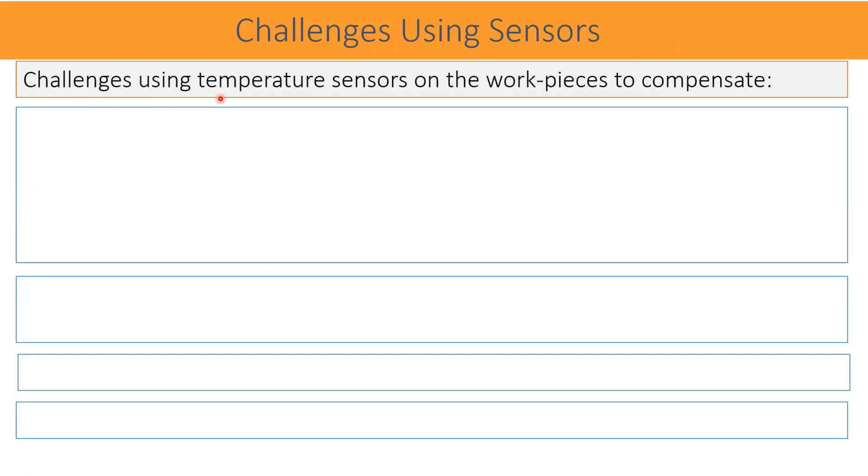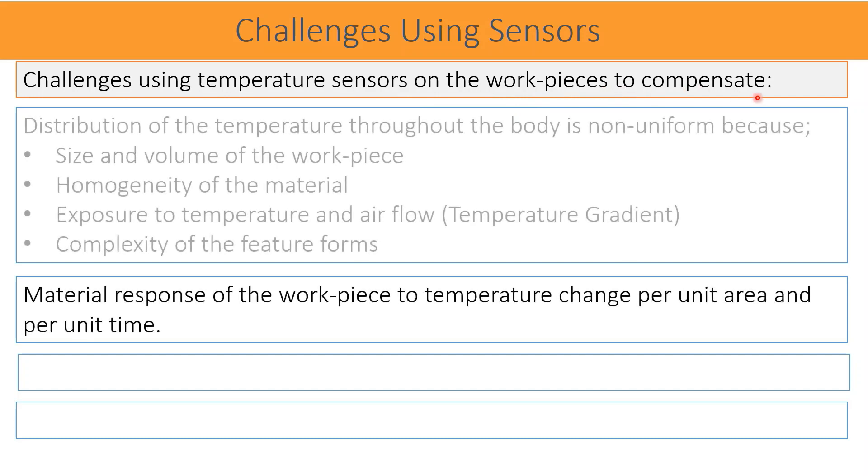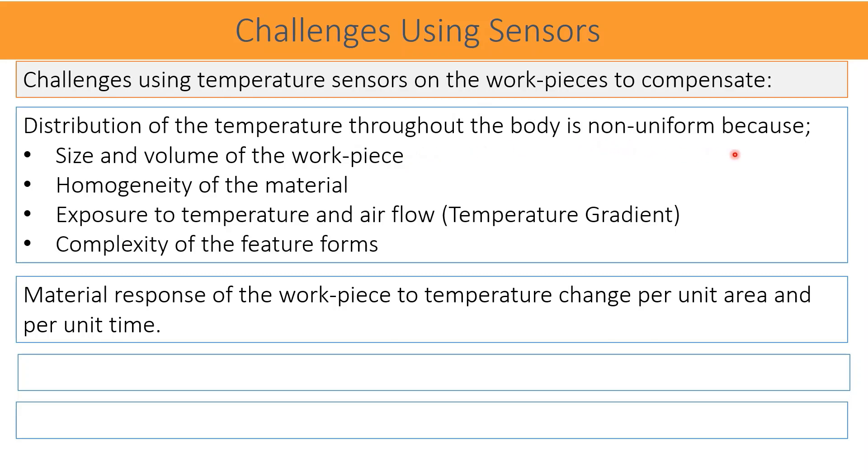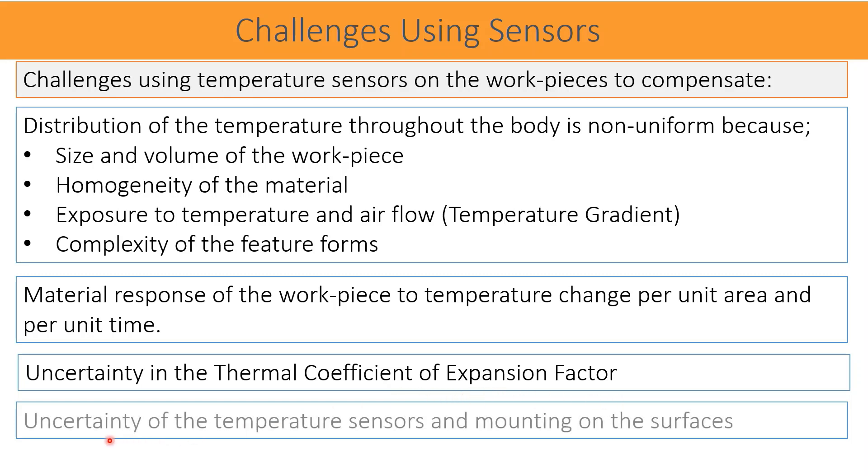Challenges using temperature sensors on the workpieces to compensate. Distribution of temperature throughout the body is not uniform because of the size and volume of the workpiece, homogeneity of the material, exposure to the temperature and air flow which is called as temperature gradient, complexity of the feature forms or the shapes, material response of the workpiece to the temperature change per unit area and per unit time, uncertainty in the thermal coefficient of expansion factor, and uncertainty of the temperature sensors and mountings on the surfaces.